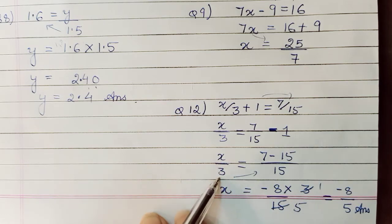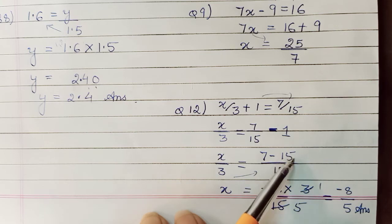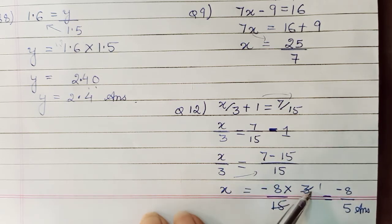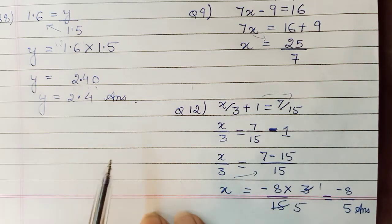So 7 minus 15 which is minus 8 upon 15. And then this 3 also had to be removed to obtain x alone. So this 3 was dividing here. On this side it will multiply. So 3 has come to numerator here. Difference of this was minus 8 upon 15. 3 and 15 get cancelled. 5 times this gets cancelled. So your answer will end up as minus 8 upon 5.